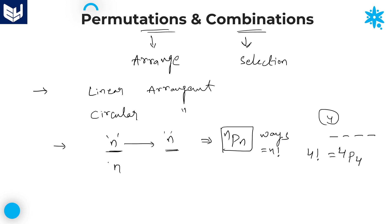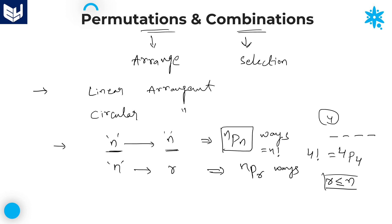Similarly, if there are n chairs and I want to arrange only r objects out of n, then we can arrange them in nPr ways. Here, the value of r must be less than or equal to n — it should not be greater than n. This is another important point. All these points are very helpful while solving problems.